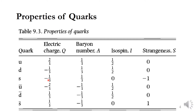The anti-particles have the opposite charge of their corresponding quarks — U-bar has -2/3, D-bar has +1/3, and S-bar has +1/3. Also the baryon number: this baryon number is 1/3 for each quark, and for anti-quarks, the negative of this, so their baryon numbers are -1/3.